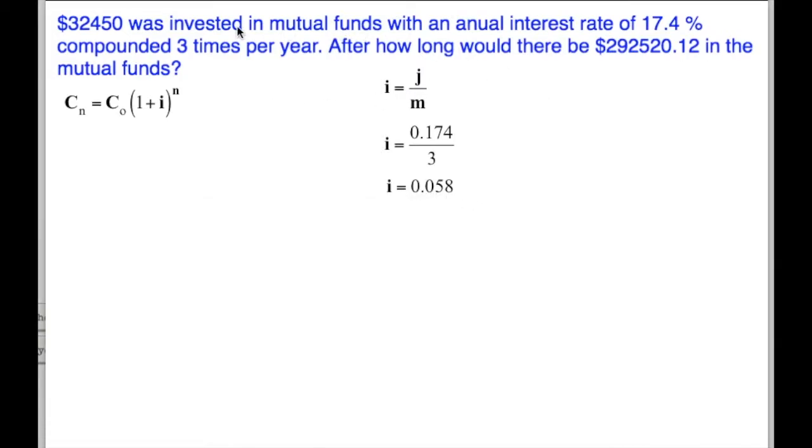n is the total number of compounds. Three compounds a year times time, but we don't know time. n is m times t, so it's going to be three times t, and we're going to be solving for t. Let's feed in everything we know. We end up with $292,520.12. That's our C sub n. Our C sub zero is our original amount, $32,450, times one plus our interest, which is 5.8% or 0.058, raised to the power of n, which is 3t.